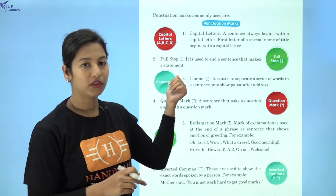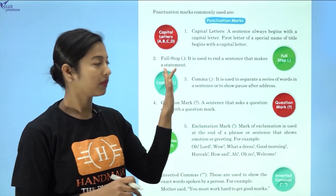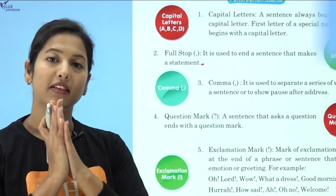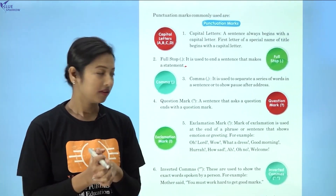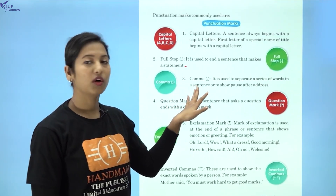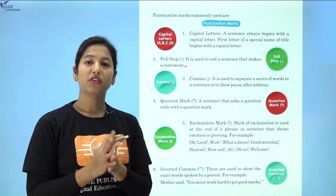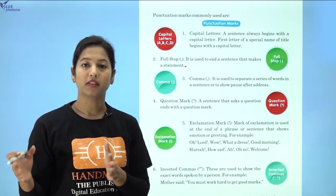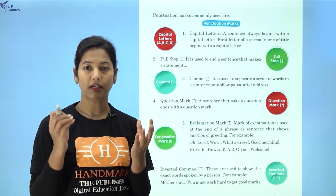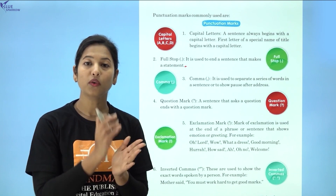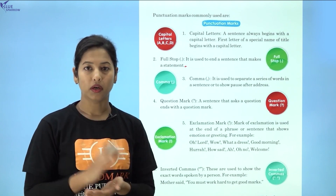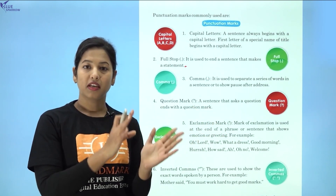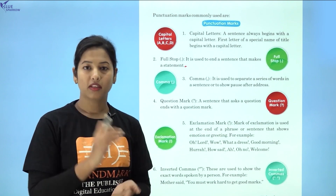The second one is full stop. This is our full stop. It is used to end a sentence. The third one is comma. Comma is generally used to separate a series of words. If we use many words at a time, we use a comma to separate the words.